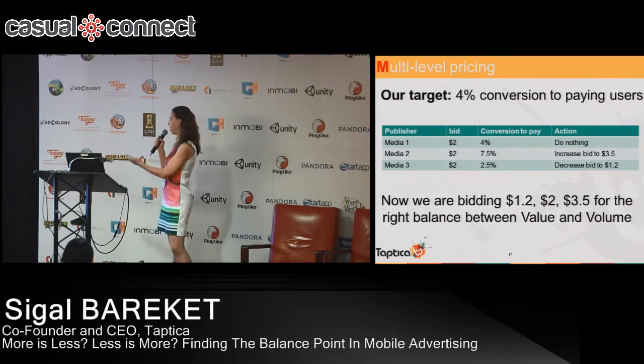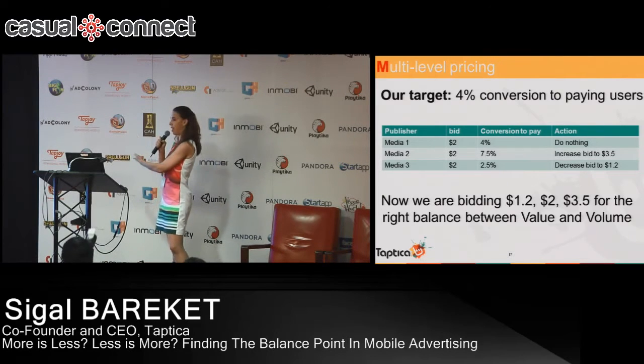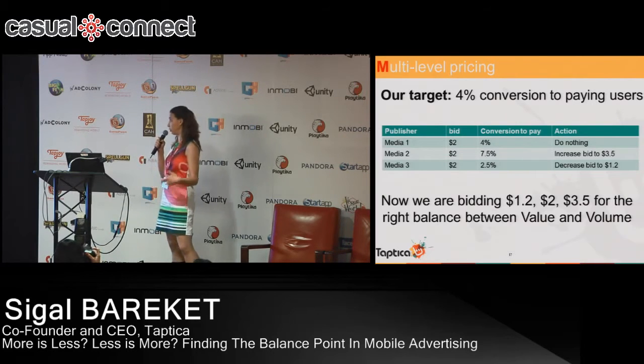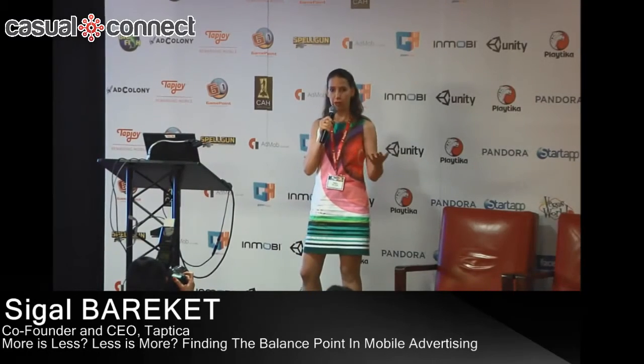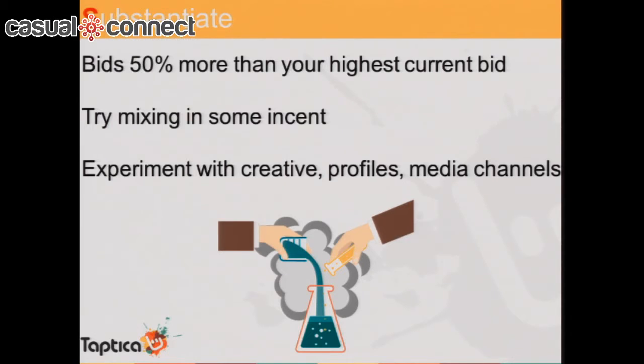The bottom line is this is exactly the balance point between volume and value. We're now bidding everything between $1.20 and $3.50, getting many users because we're bidding according to each media source, and our users are meeting our target of 4% conversion to paying users. This balance point between value and volume is reached through multi-level pricing.